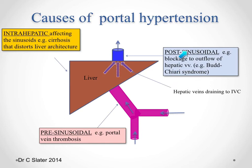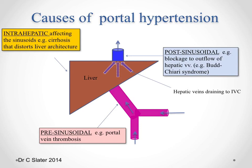A third type occurs after the liver, referred to as post-sinusoidal — a syndrome known as Budd-Chiari syndrome, in which obstruction of blood flow in the hepatic veins draining into the inferior vena cava results in increased pressure within the liver, transmitted back into the portal system, giving rise to portal hypertension. Budd-Chiari syndrome may arise from thrombosis within the hepatic veins or compression by an outside structure such as a tumour.